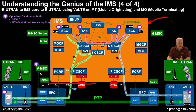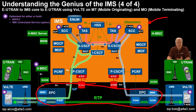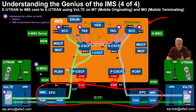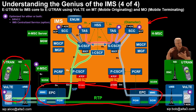The evolved packet core is what I've just circled — that's for IP, and basically a bunch of overpriced routers, essentially. And then we have the eUTRAN, which I'm showing as VoLTE, which is the radio access piece.